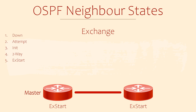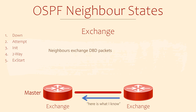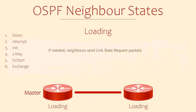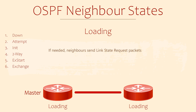The exchange state is where neighbours exchange DBD packets. These contain LSA headers, which are summary information about the network. The point of this is to find out if either router has missing records from its database. It's likely that there will be some updates required.